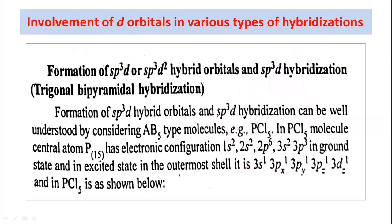Now let us discuss the next topic: involvement of d orbitals in various types of hybridizations. First, the formation of SP3d hybrid orbitals — where 1s, 3p, and 1d orbitals get mixed up — results in the formation of five newly formed hybrid orbitals with equivalent energy.